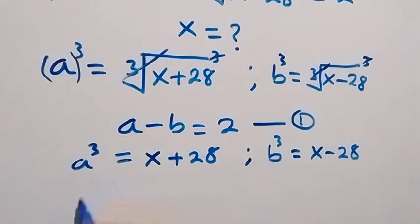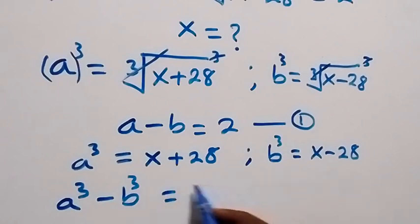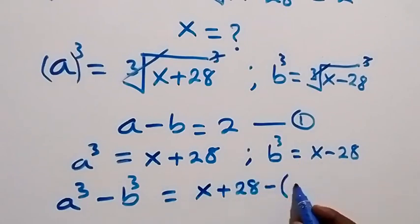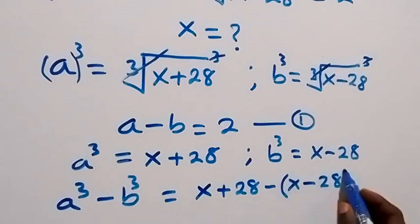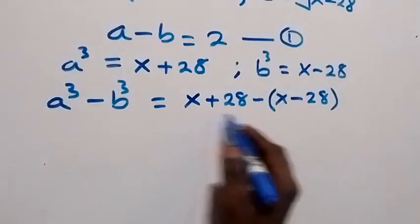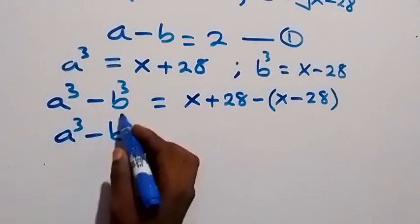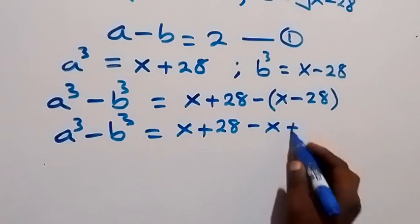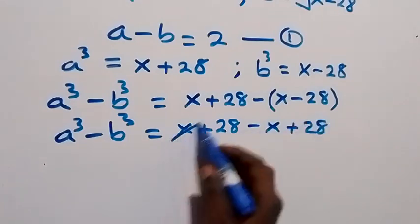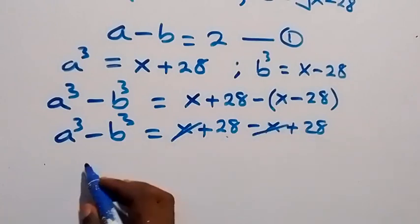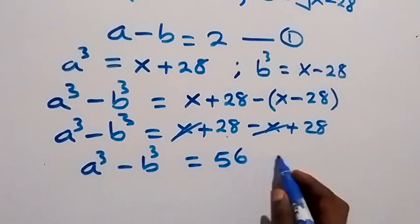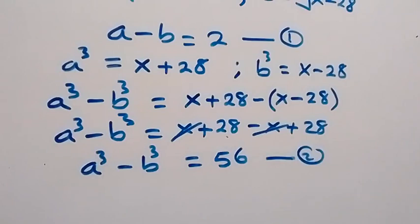In the next step, let's subtract b³ from a³. We have a³ minus b³ equals (x plus 28) minus (x minus 28). Opening the bracket, x minus x cancels out, and 28 plus 28 gives us 56. So a³ minus b³ equals 56, and let's label this as equation 2.